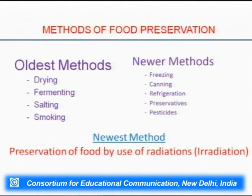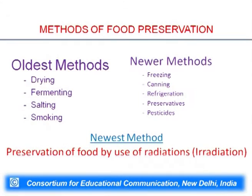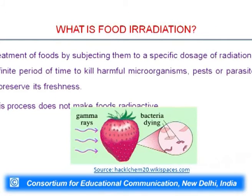We have several methods to preserve food. From ancient times, we have used drying, fermenting, salting, and smoking. Later we shifted to newer methods like freezing, canning, refrigeration, and adding chemical, biological, or other preservatives. Now we have the newest method — radiation — also termed food irradiation.